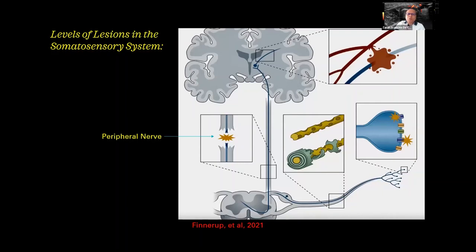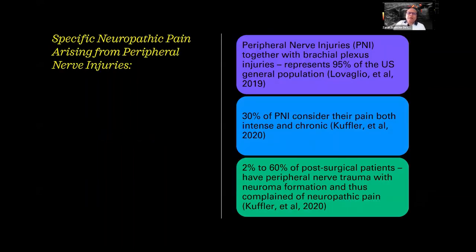This is the somatosensory system, diagrammatically illustrated here. You can see that any part of this system up to the pre-motor cortex is considered to be affected in neuropathic pain. We can see the ascending pathway, the sensory portion, the synapse, the peripheral nerve, and up to the thalamic area. Any lesion affecting this part is considered to be causing neuropathic pain. The specific neuropathic pain we are going to discuss will be focused more on the peripheral nerves, not the brain or spinal cord.